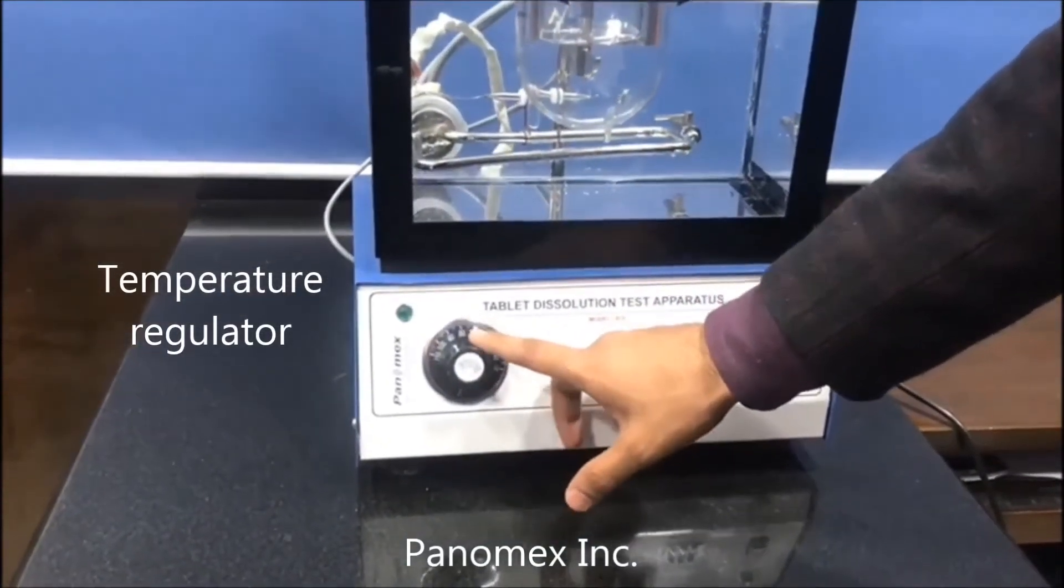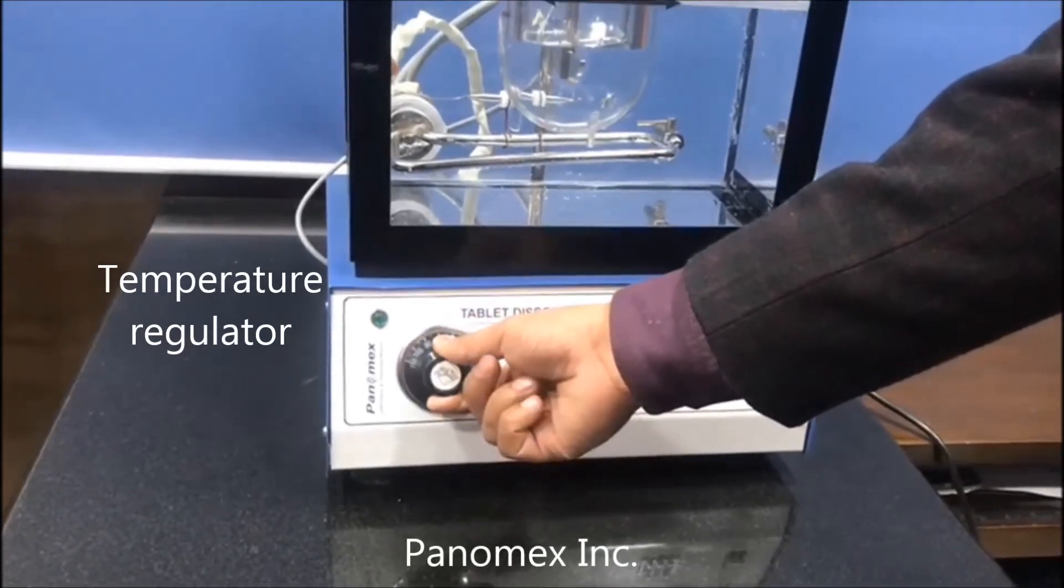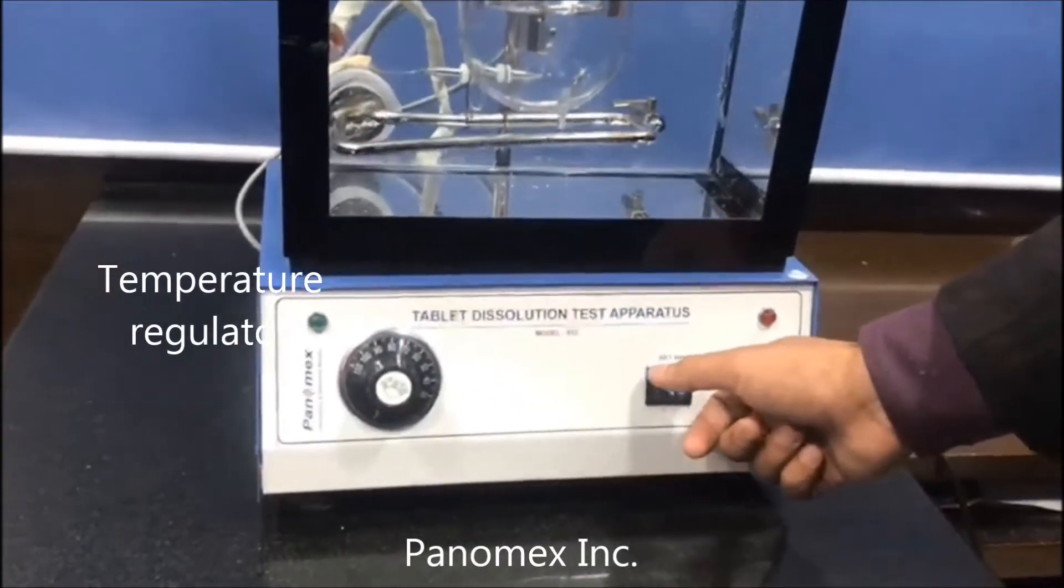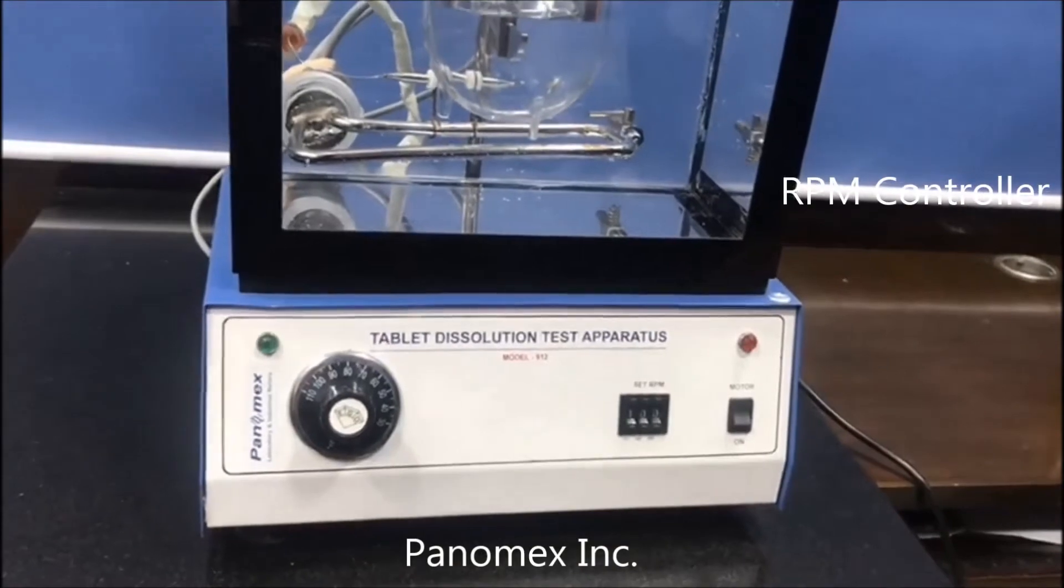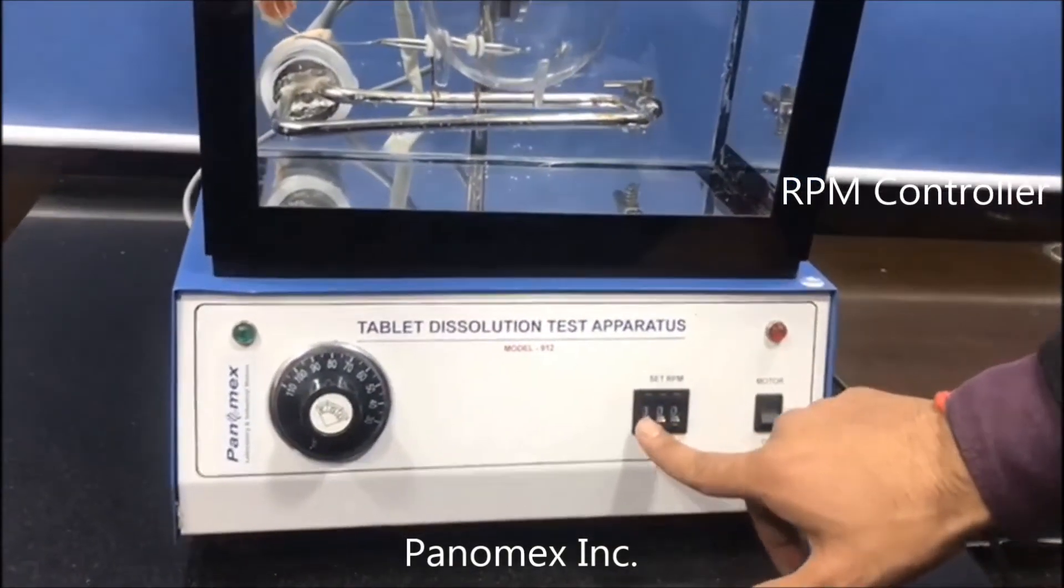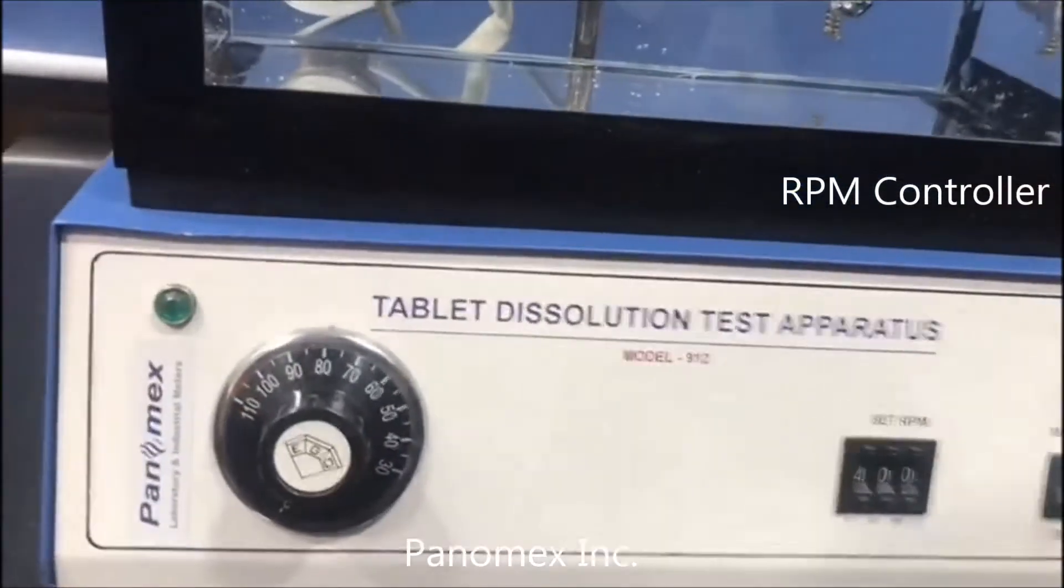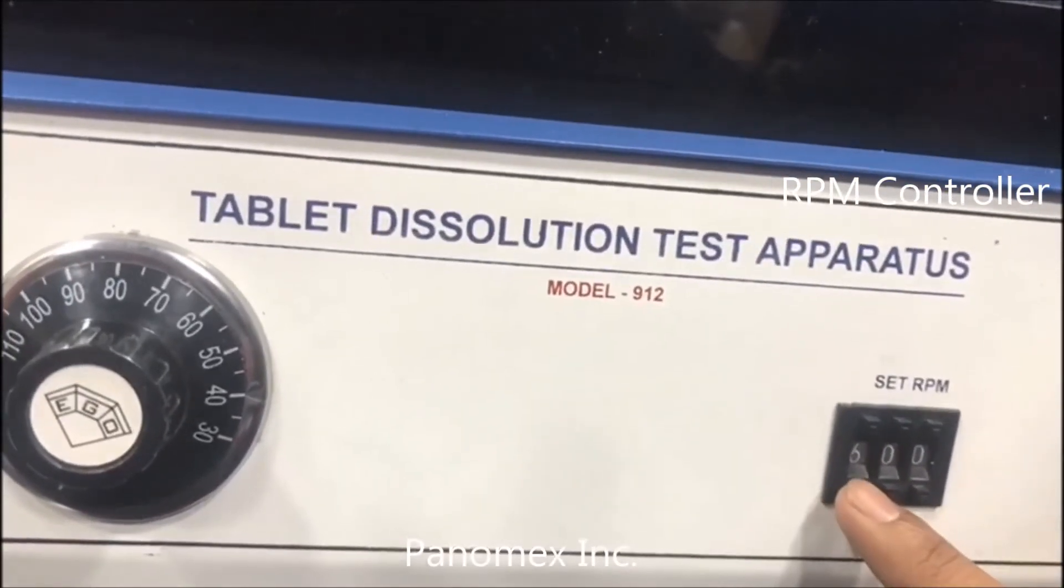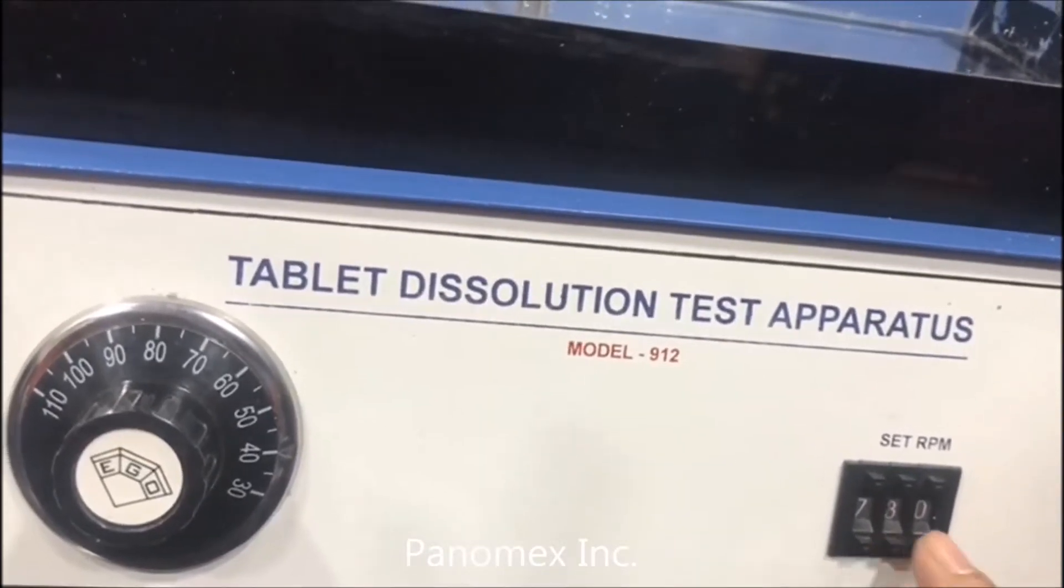This is the temperature regulator. As you can see, you can move it like this as per your need and requirement. It's written here set RPM—revolutions per minute. You can see it is moving and increasing: five, six, seven. Same with this one and the other one.